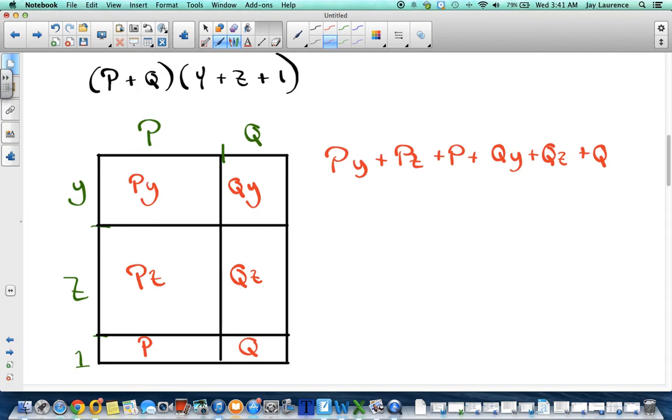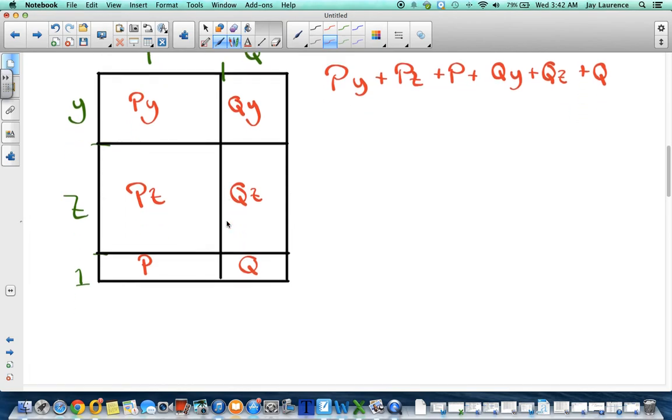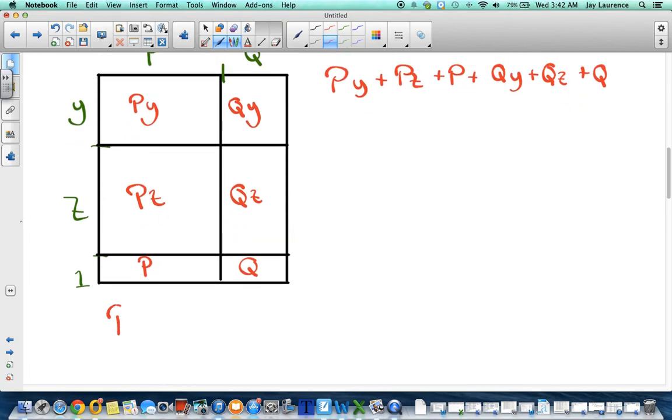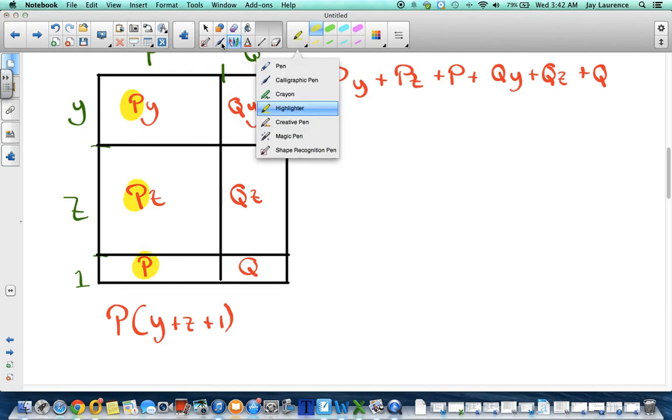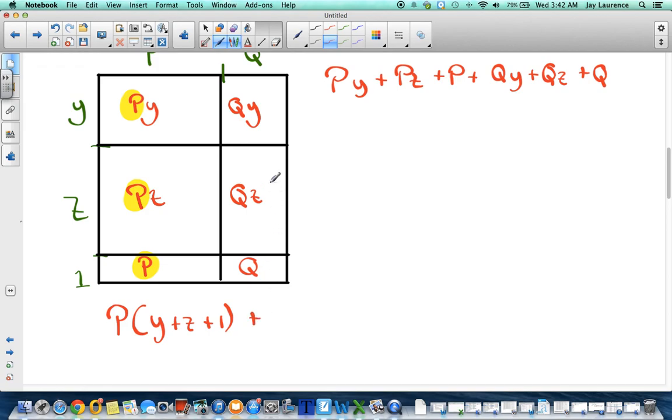Okay. Now, one thing I want to point out to you. You see how these all have p's in them? I could have thought about this from the beginning as p times the quantity of y plus z plus 1. Right? See that? Because there's a p here, a p here, and a p here. Then, if I did that, I would have to add it to this one, which would be q times the quantity of y plus z plus 1.